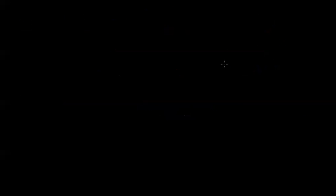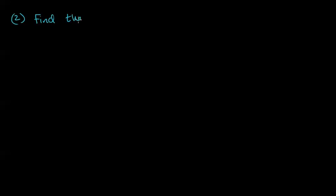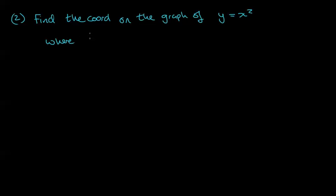Now let's look at something a bit more challenging — we're working backwards. Example 2: find the coordinate on the graph of y = x² where the gradient is equal to 8. So where on this graph is the gradient equal to 8?